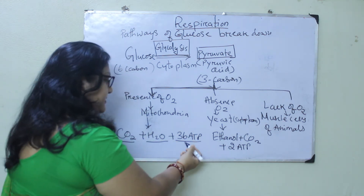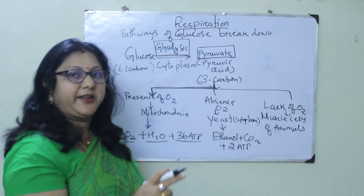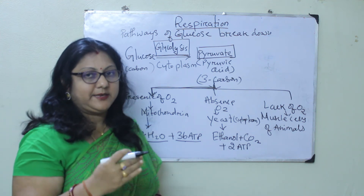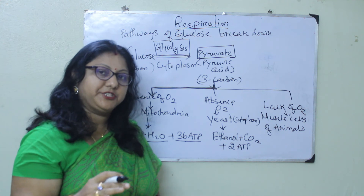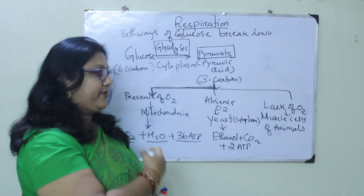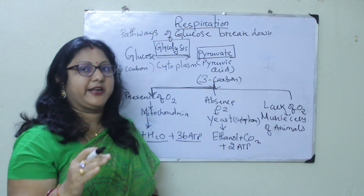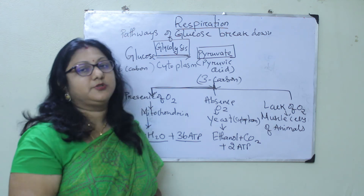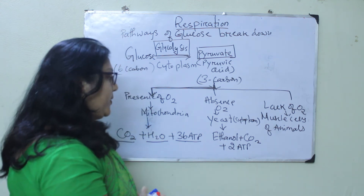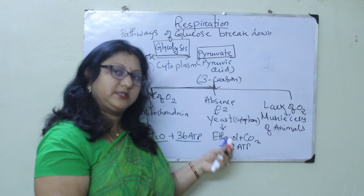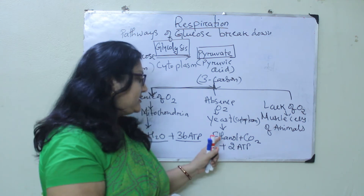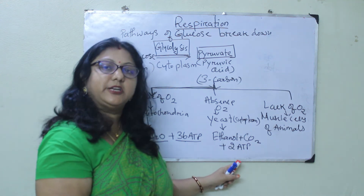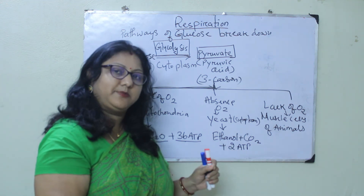The 36 ATP are produced only in aerobic respiration, where the complete breakdown — complete oxidation — of the glucose molecule takes place. In yeast cells, alcohol and carbon dioxide are produced along with only 2 molecules of ATP, which is a very small amount of energy.